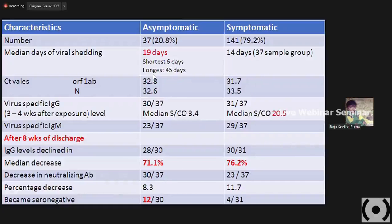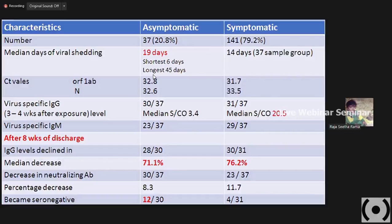This slide clearly explains the various characteristics. Around 20.8% of patients come up with asymptomatic conditions, while symptomatic conditions are around 79.2% — approximately 141 cases. This makes it very complex to handle. The median days of viral shedding in case of asymptomatic is 19 days, whereas in symptomatic it is 14 days for a sample group of 37. In asymptomatic cases, it varies between 6 to 45 days, making it a more complicated situation.